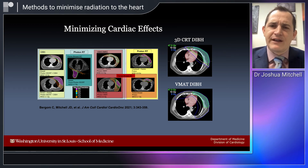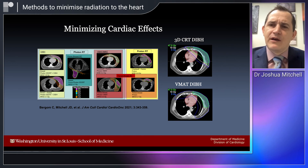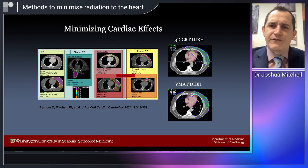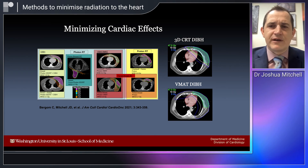Even with these techniques, we can still get radiation doses to cardiac substructures. On this slide you can see several techniques to minimize radiation dose to the heart, including deep inspiratory breath hold, prone radiation, and proton therapy. But on the right side of the screen, even with the most modern techniques — conformal radiation therapy with deep inspiratory breath hold, or volumetric modulated arc therapy (VMAT) — the radiation is focused to the tumor and chest wall, but we still see some heart involvement in certain substructures. So even with these techniques, we still need to screen for disease.